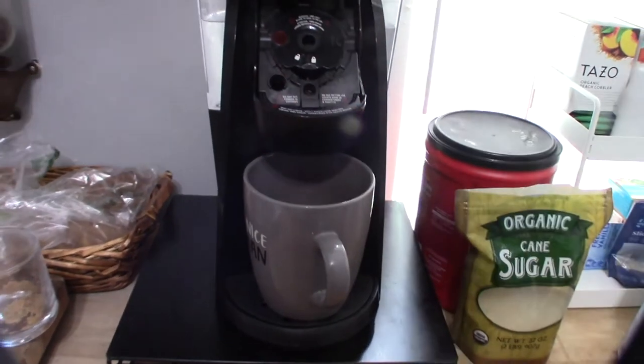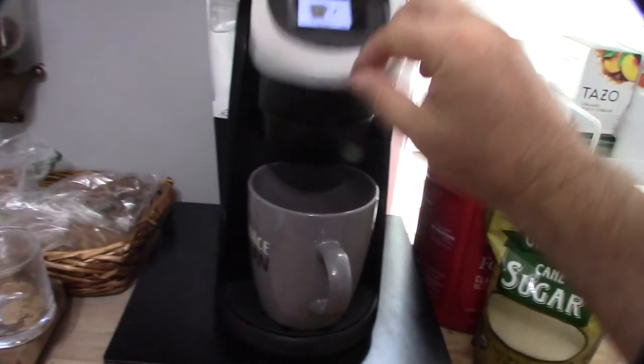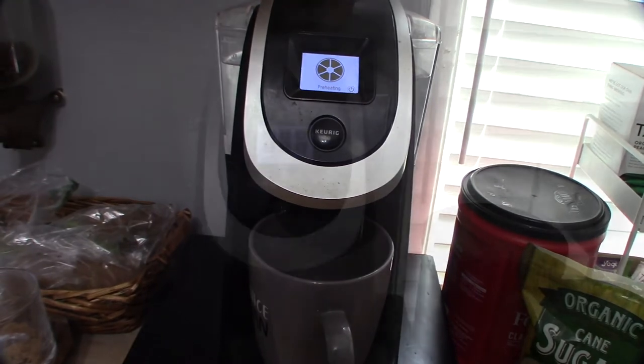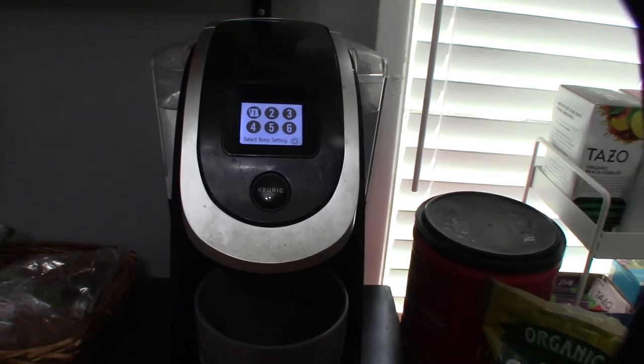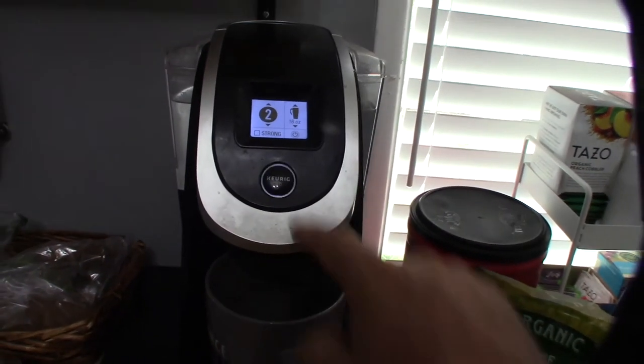Alright. So I don't actually use those K-cup things. I just use like the refillable Folgers. Alright. Preheating. Alright. So when you put a cup like that in there, you don't get the... you get a different set of options when you don't use the K-cup. So my option is two. And I want to do 16 ounces. And let's go.